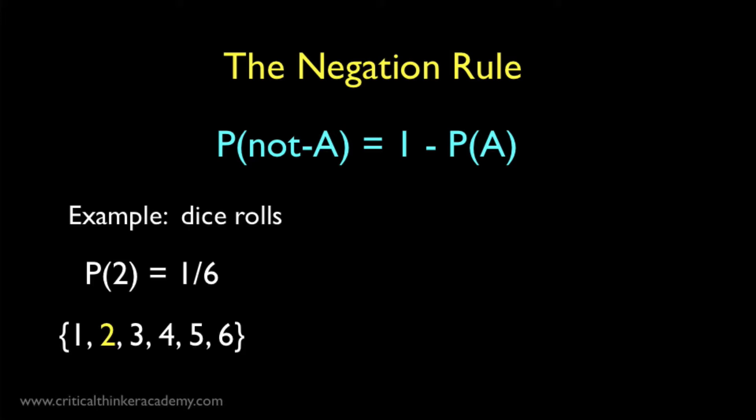We know that the probability of rolling a 2 on a six-sided die is just 1 in 6. Our space of possible outcomes has six elements in it, and the outcome that we care about is just one of those elements. So the ratio is 1 in 6.